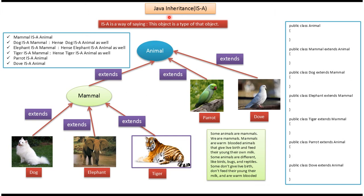In this video tutorial I will cover Java IS-A relationship. IS-A is a way of saying this object is a type of that object. Here you can see mammal extends animal, so mammal is an animal. Dog extends mammal, so dog is a mammal and also dog is an animal. Elephant extends mammal, so elephant is a mammal and also elephant is an animal. Tiger extends mammal, so tiger is a mammal and tiger is also an animal. Parrot extends animal, so parrot is an animal.